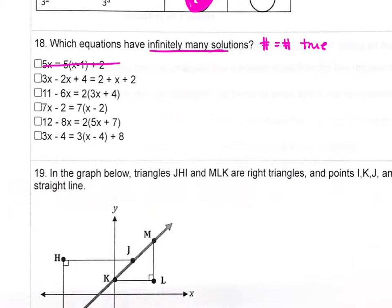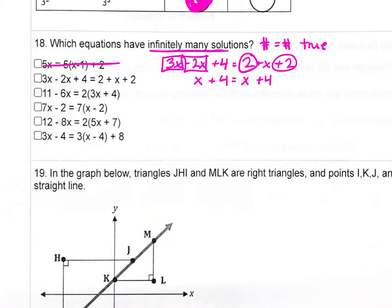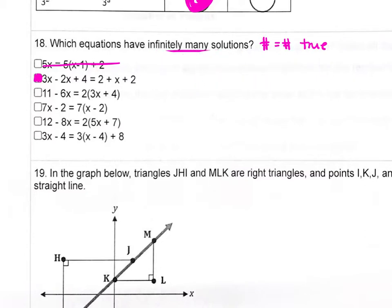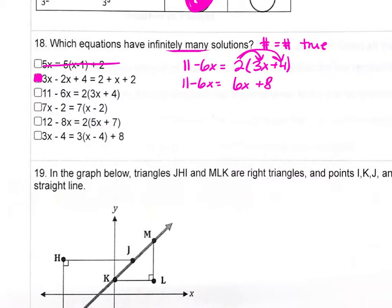Our next problem: 3x minus 2x plus 4 equals 2 plus x plus 2. We box in like terms and combine them. We get x plus 4 on the left, and on the right 2 plus 2 is 4, giving x plus 4. The left side and the right side are the same, so this is true — infinitely many solutions. For the next equation, 11 minus 6x equals 2 times (3x plus 4), we distribute to get 6x plus 8. The x terms differ, so this will have one solution.